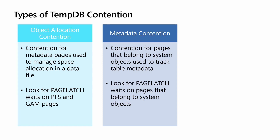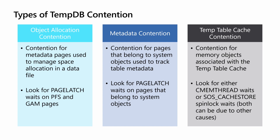The next is metadata contention, and this happens whenever we are creating or destroying temp tables and modifying the metadata associated with those tables. What you're seeing here is page latch contention again, but this time the pages belong to system objects — tables like sysobj values, for example — where we are storing the metadata for all the objects in TempDB. The last type of contention, which is relatively new, is temp table cache contention. We do cache temp table objects to help with both metadata and object allocation contention, but as servers get larger with more CPU and memory, we start to see contention on the memory objects that support the temp table cache. You might see cmem thread waits or SOS cache store spin lock waits during execution related to TempDB workloads.